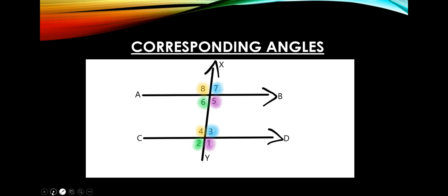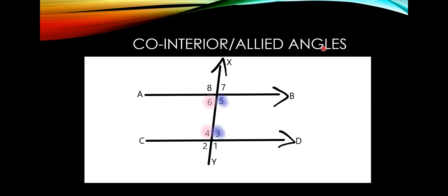The last type is co-interior or allied angles. In the interior part of the two straight lines, if angles are formed on the same side of the transversal, they are called co-interior or allied angles. Angle 6 and angle 4 are formed on the same side (the left side), so they are one pair. Angle 5 and angle 3 are another pair. There are two pairs of co-interior or allied angles.